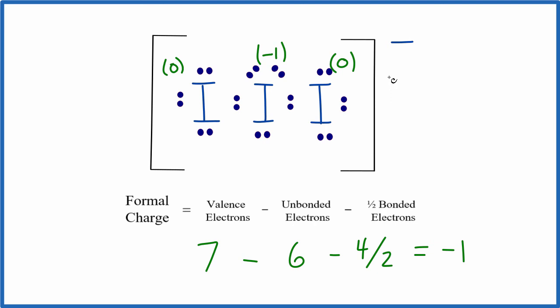If we had put those valence electrons on the other iodine, we might have problems. Let's see what that might look like. Iodine's in group 17, 7a. It has 7 valence electrons unbonded, 2, 4, 6, 8.